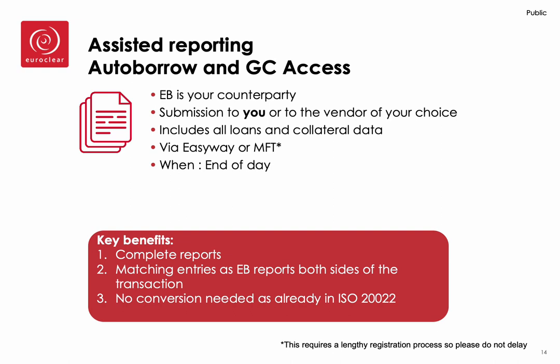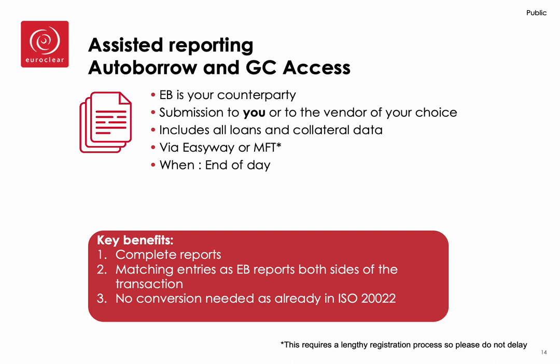If you opt to use the assisted reporting service for your auto borrow and GC access loans, Euroclear will produce the same report as the one for the delegated reporting service, so it will include all loan and collateral data. The difference is that this report will not be sent directly to the trade repository, but to you for consumption in your in-house systems or to the vendor of your choice. For your tri-party repo and tri-party securities lending activity, Euroclear will create and enrich a report that includes all the collateral data required by SFTR, and this report will also be sent to you or to your vendor.